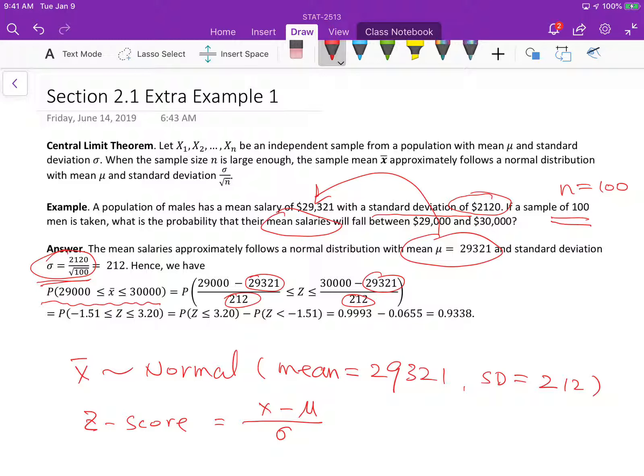So here we replace this x bar by z. After standardization, we get the z-score. The probability that x bar falls between 29,000 and 30,000 is equal to this. Essentially this step is to calculate the z-score of each of them. Then we do the math and get this step.